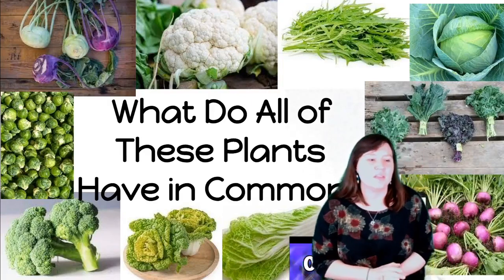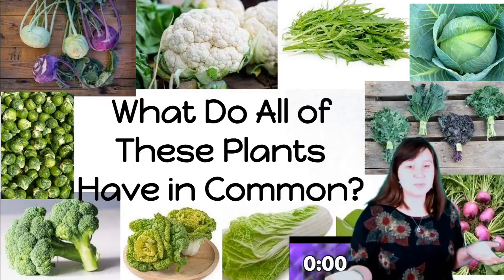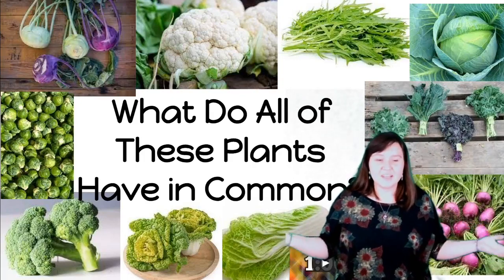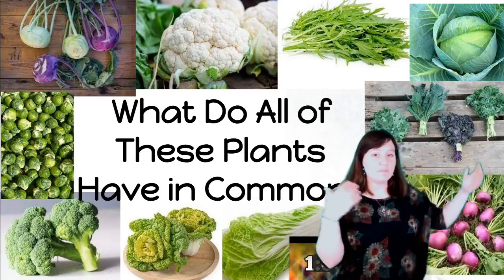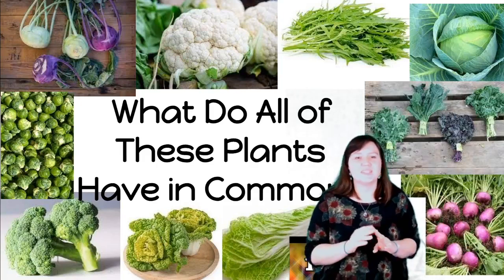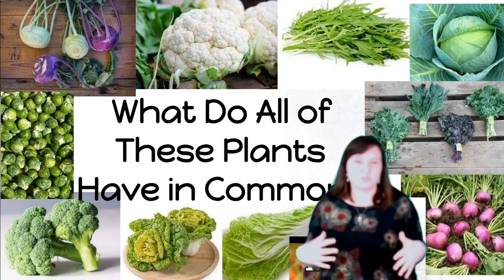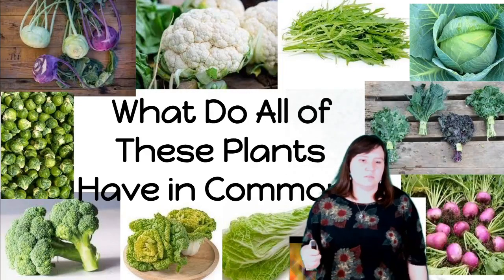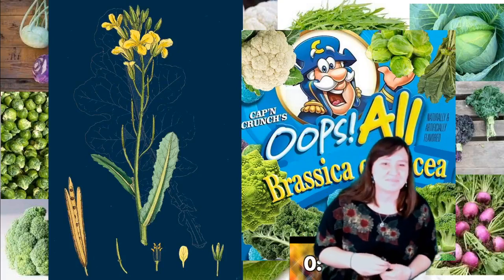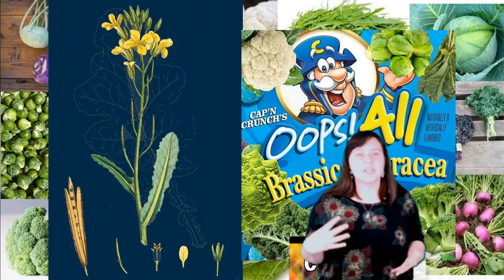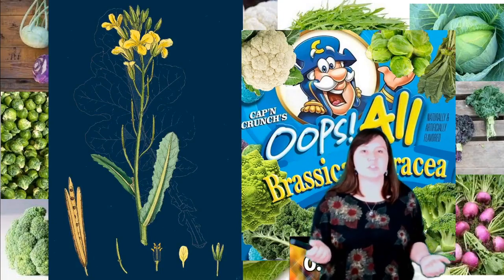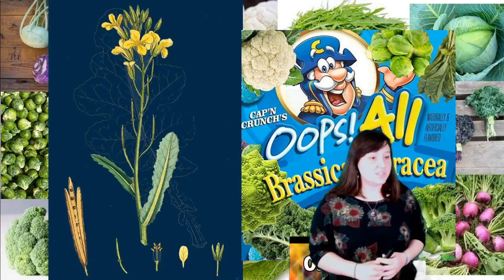Okay, so there are some obvious similarities. It looks like we didn't get any comments, so I'll just say what I found: they all have green leaves, they are all vegetables, and most impressively, all of these plants were bred from the same common ancestor. Brussels sprouts, cabbage, broccoli, cauliflower, kale, collard greens, savoy cabbage, kohlrabi, gai lan, and several other vegetables can all be traced back to Brassica oleracea.